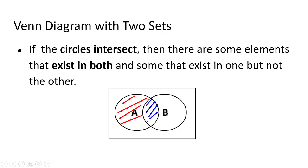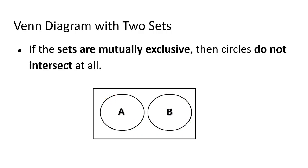For example, the region belonging only to set A contains elements that are part of A but not common to B. Similarly, the region on the other side contains elements that belong to B but are not common to A. We may also have a situation where both sets do not interact with each other at all — that is the scenario where A and B do not intersect, so we say they are mutually exclusive. None of the elements in set A are common to set B.